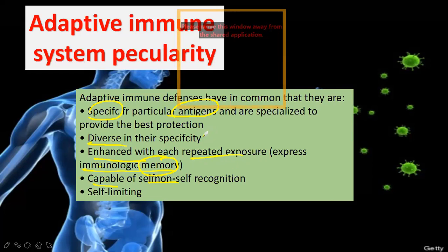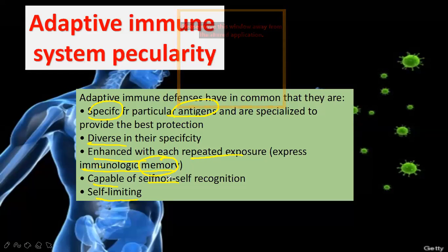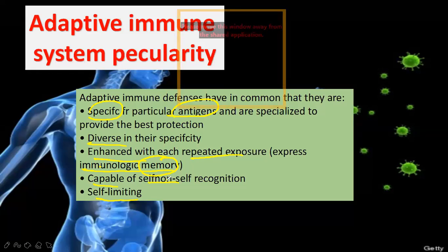Adaptive immunity also has memory — you need to memorize this property. It has specificity, diversity — too much diversity. It has memory and is self-limiting — it automatically controls. When the job is done and the enemy is removed, the CD4 cell gives message to CD8 cell and B cell: now rest, no need for more killing.